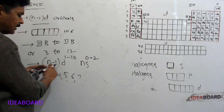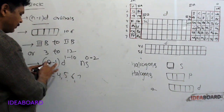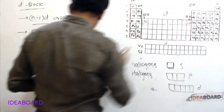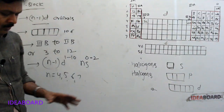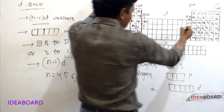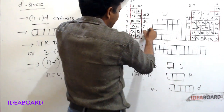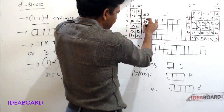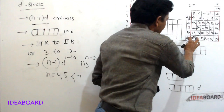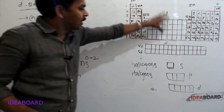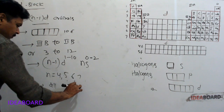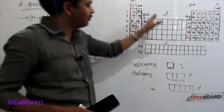The 6d series starts with actinium and ends with copernicium. All D block elements are metals only. This completes the discussion of D block elements.